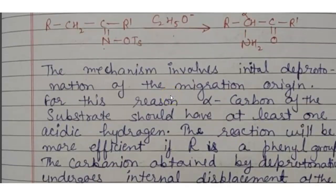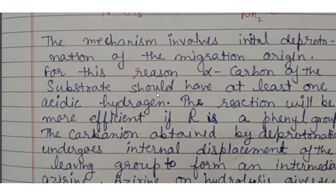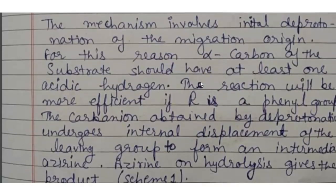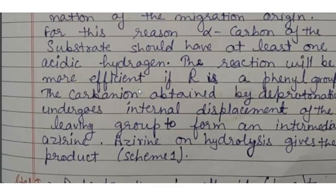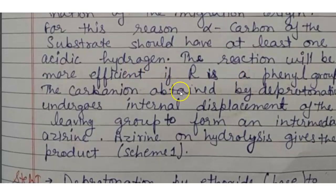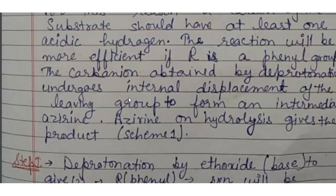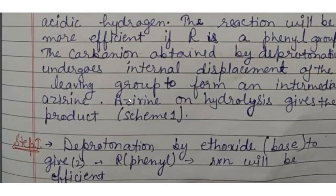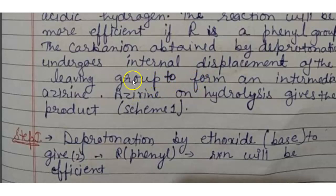The mechanism involves initial deprotonation of the migration origin. For this reaction, alpha carbon of the substrate should have at least one acidic hydrogen. The reaction will be more efficient if R is a phenyl group. The carbanion obtained by deprotonation undergoes internal displacement of the leaving group to form an intermediate.